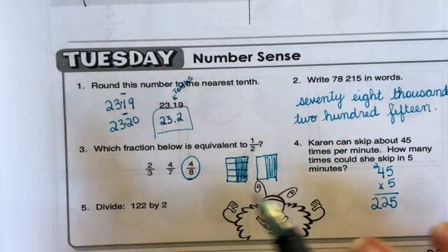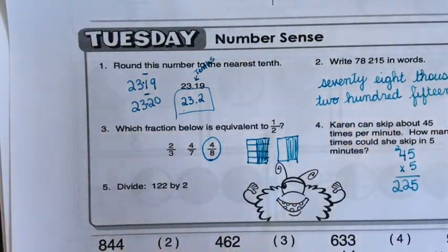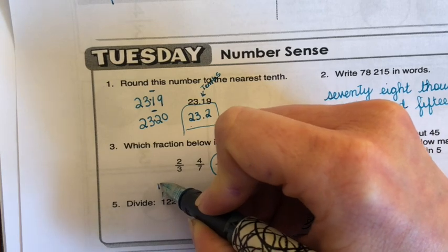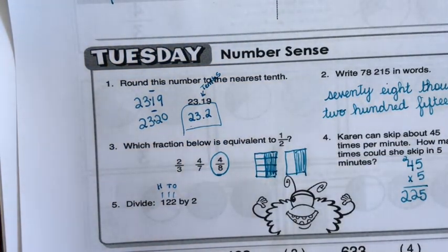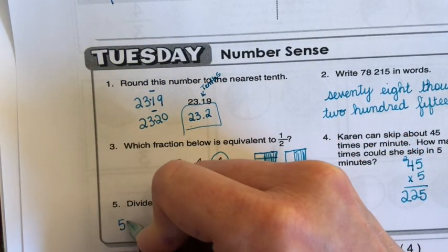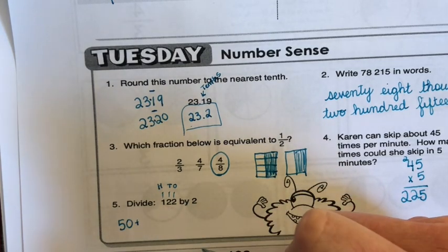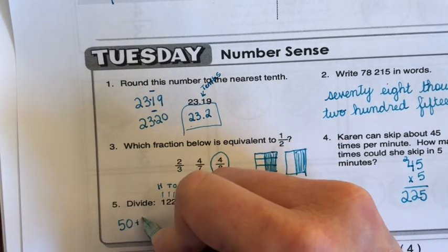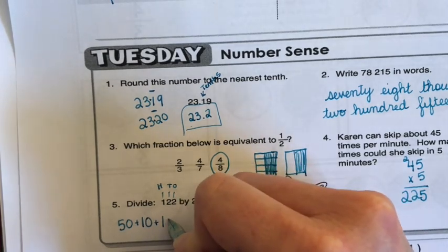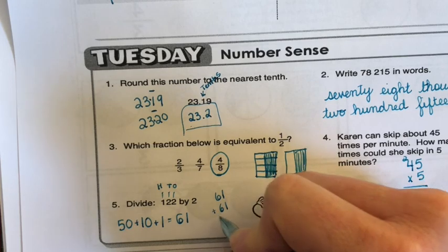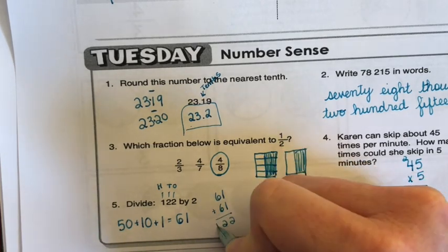Divide 122 by two. So you guys could do that long division style or I'm going to show you a different way to look at it. I'm going to take each one of these, my hundreds, my tens, and my ones. And I'm going to divide each one by two and add them together. This is just something that when I do problem solving, sometimes I like to show you a different way to do it. So half of 100 is 50. Half of 20 is 10 and half of two is one. So it's 50, 61. Now to check that, I could do 61 plus 61, 122.